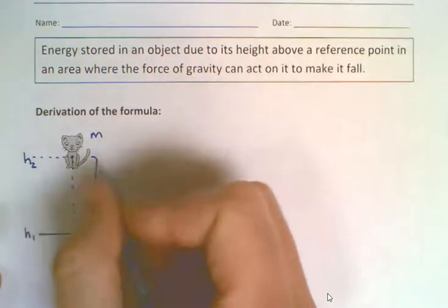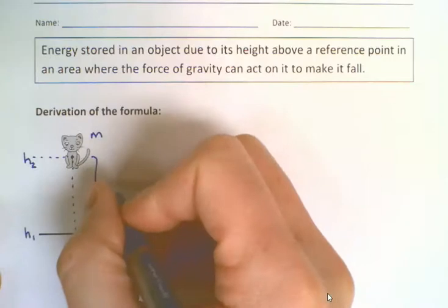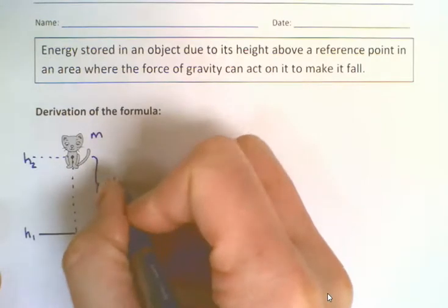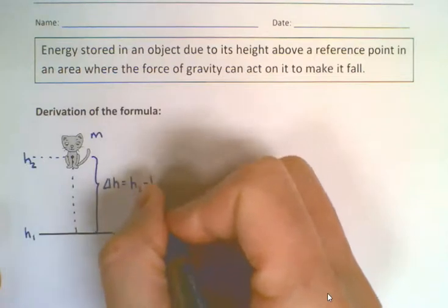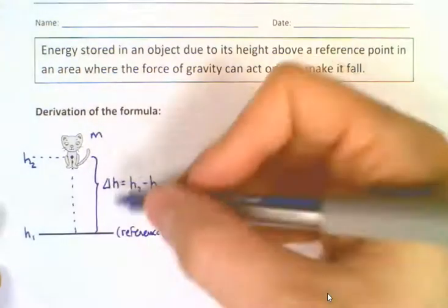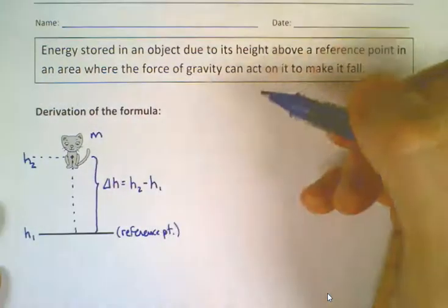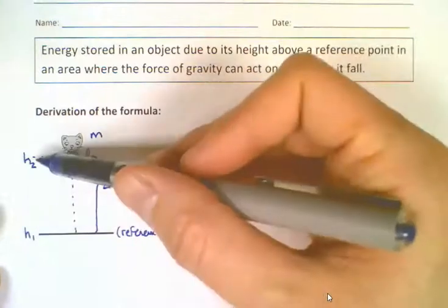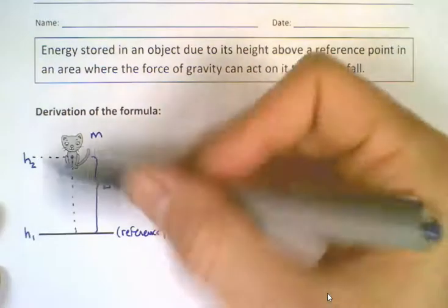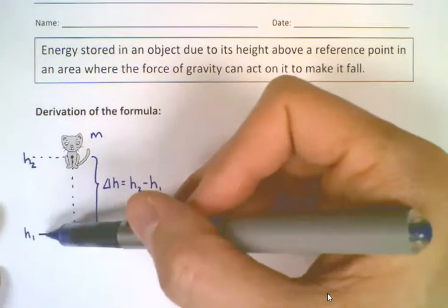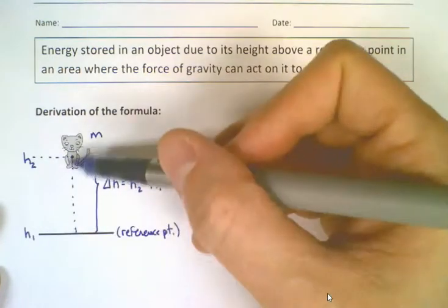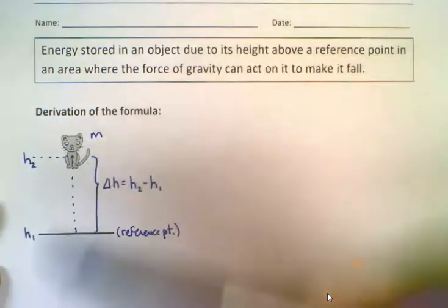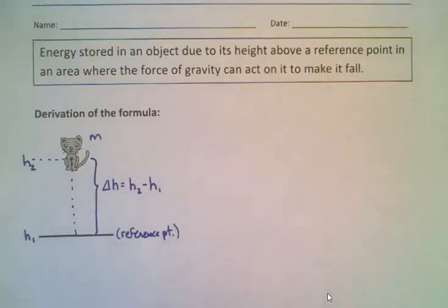This height is delta h. We know that if we take the final height h2 and subtract the initial height h1, that will tell us how much height the object has gained. So if h1 is 0 and h2 is 10, that's 10 meters. If h1 is 7 and h2 is 10, we've lifted the object 3 meters. That's important because we're talking about the work done to lift an object from one position to another.